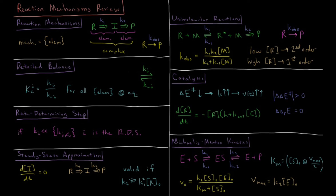Finally, we look at Michaelis-Menten kinetics, which is an expression for the catalytic effect of enzymes acting on a substrate and how the rate of that reaction depends on the concentration of enzyme and substrate. We first have the enzyme and substrate reacting to form the enzyme-substrate complex, and then this enzyme-substrate complex reacts to form the free enzyme plus the product.